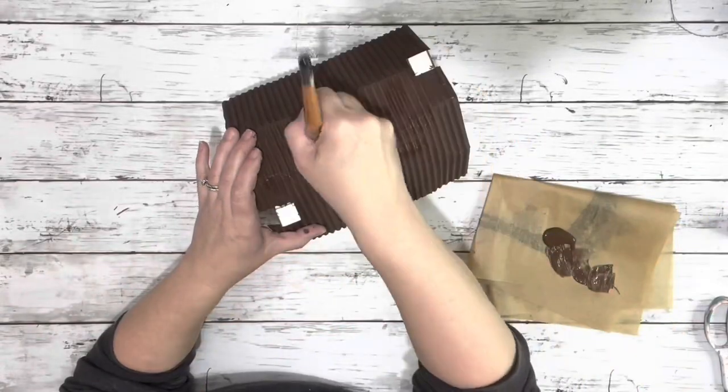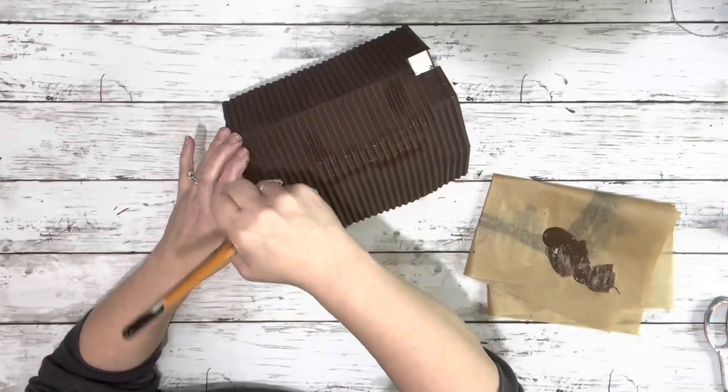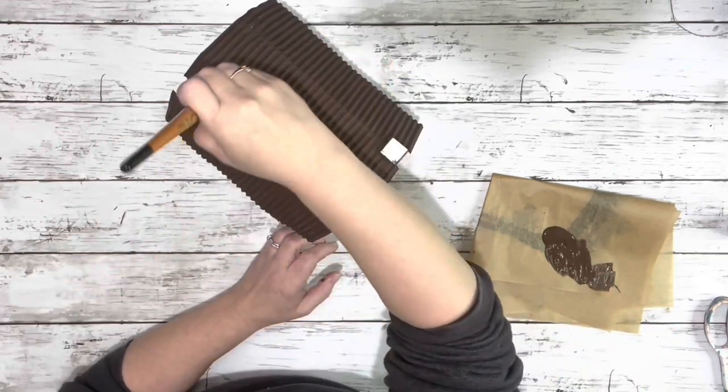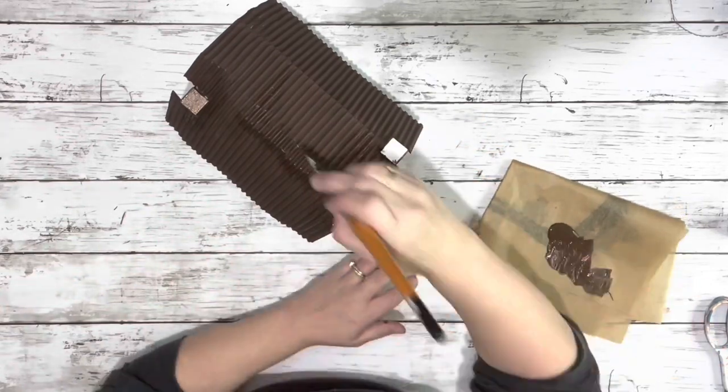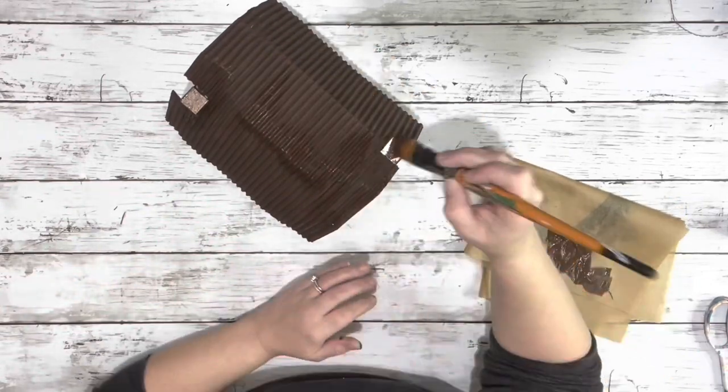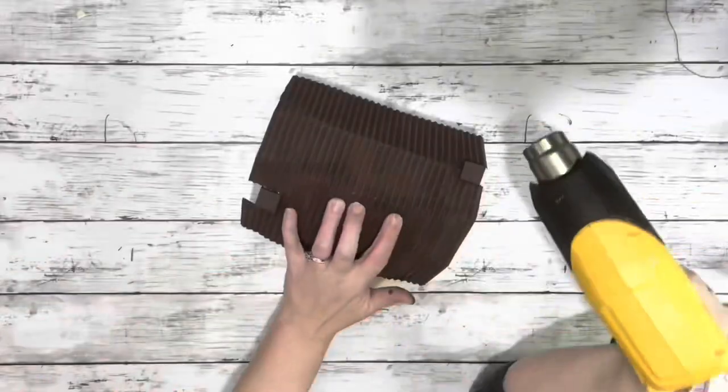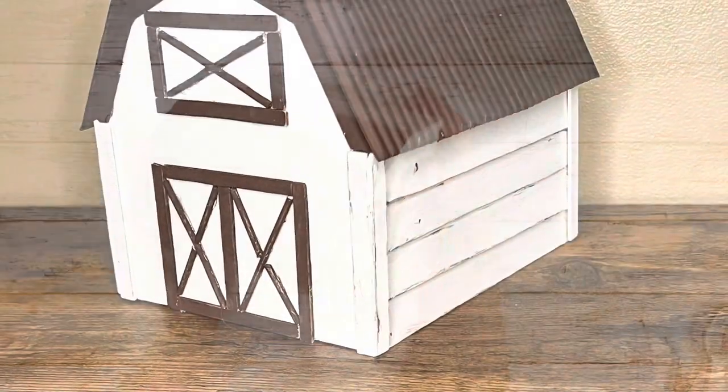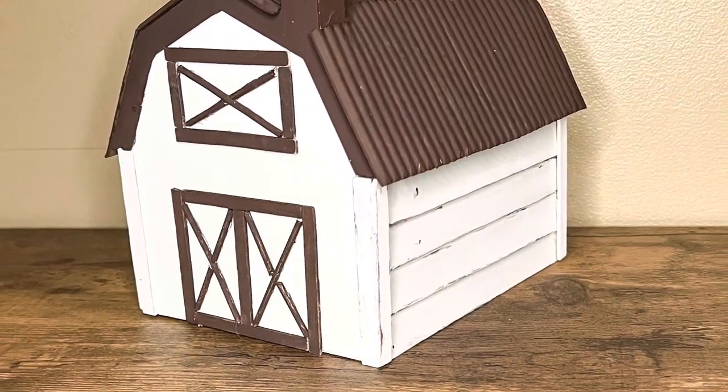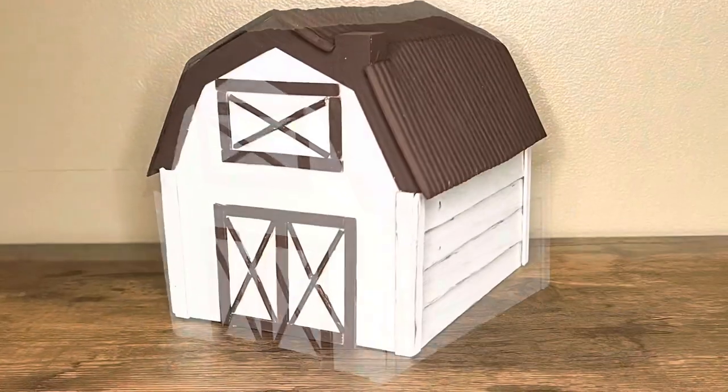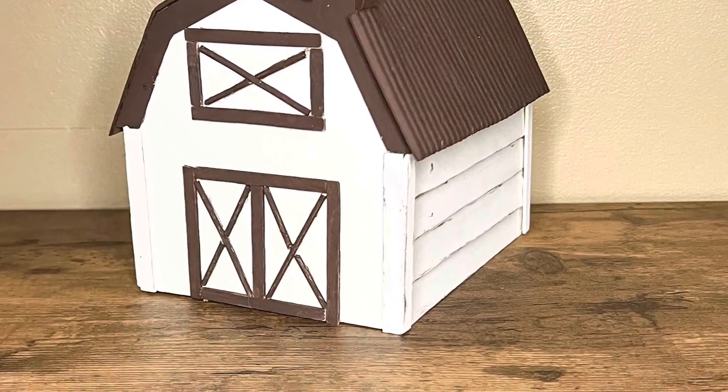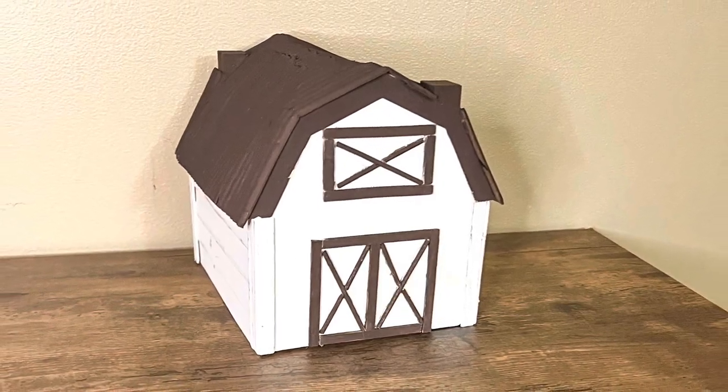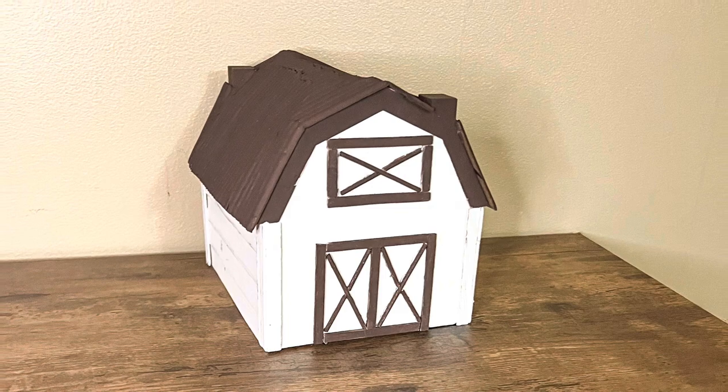Then I just touched up those areas I was talking about and did two coats of the burnt umber paint on those chimneys, touching up any spots on the roof that needed it. And that's it for this project. I am so happy with how this turned out. Thank you guys so much for watching.